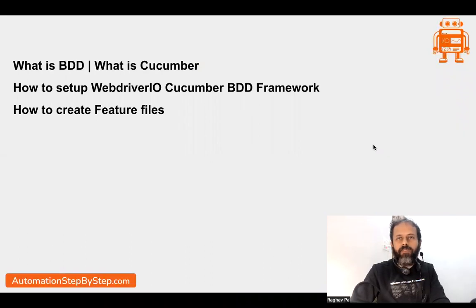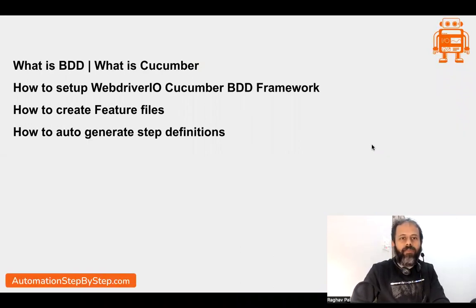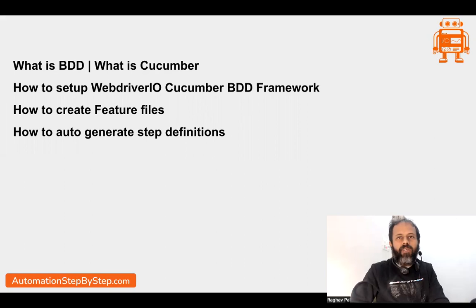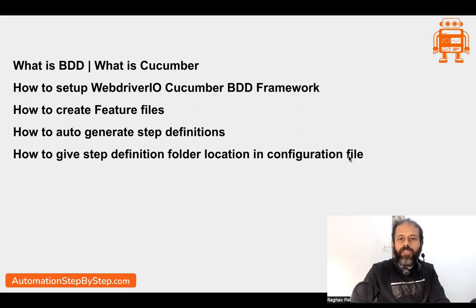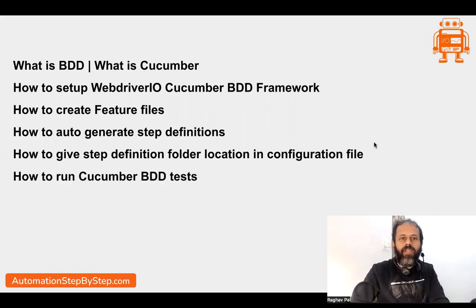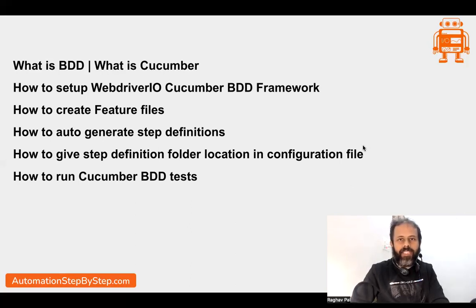We will create some feature files, see what they are and how to create them, and also see how to generate step definitions and auto-generate them. If you do not understand what feature files or step definitions are, do not worry — I will explain everything. We will also see how to give the location of our step definition folder in the configuration file, and then create and run some BDD Cucumber tests. I'll keep all the notes and links in the description. If you face any issues, let me know in the comments and I will reply.